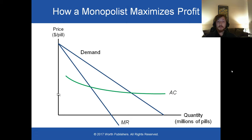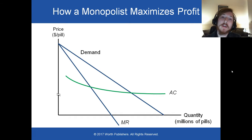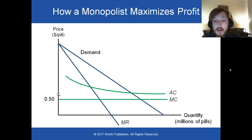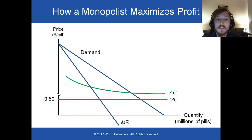Just like in perfect competition, monopolists face an average cost curve, calculated the same way as in perfect competition. They also face marginal cost curves, and usually the marginal cost is consistent.